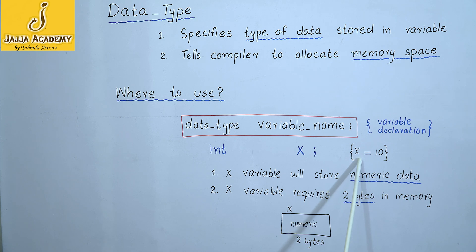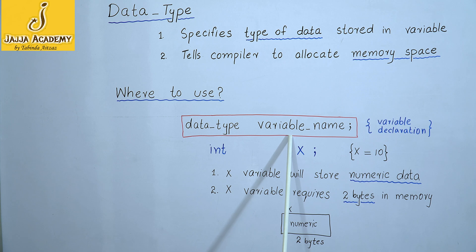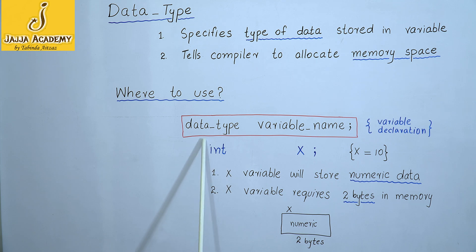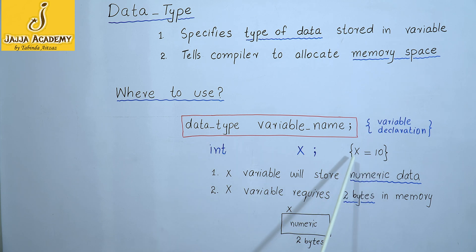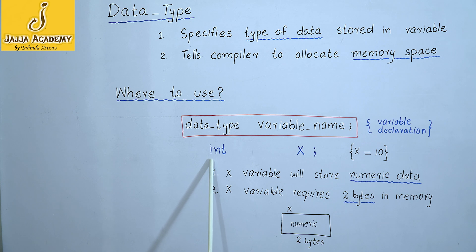I will declare the variable x using the syntax of variable declaration. I have written x as the name of the variable, and along with the variable name, I must provide its data type, which depends on the requirements of the user. Since I want to store 10 in x, I will choose a numeric data type. Integer data type supports numeric values.